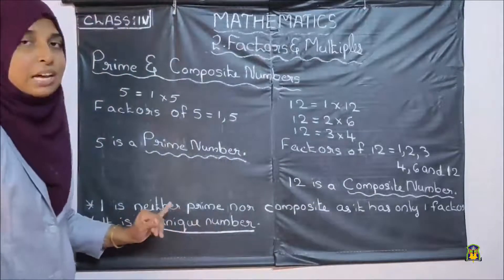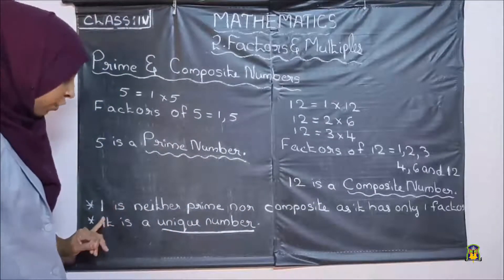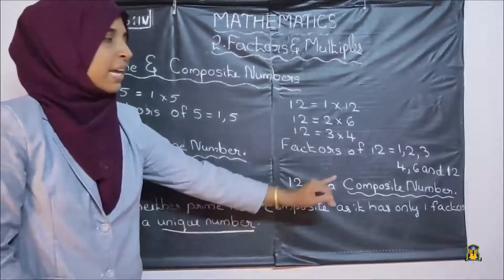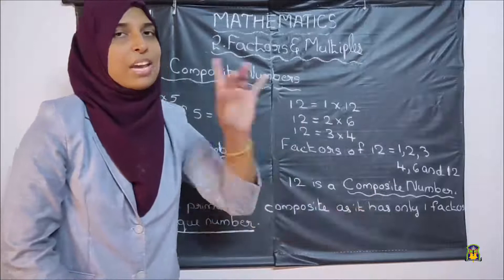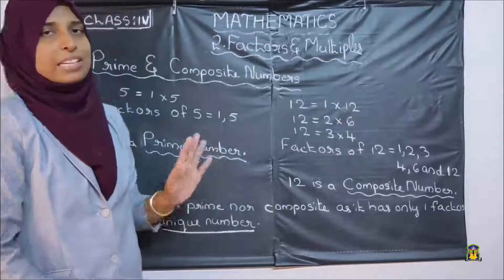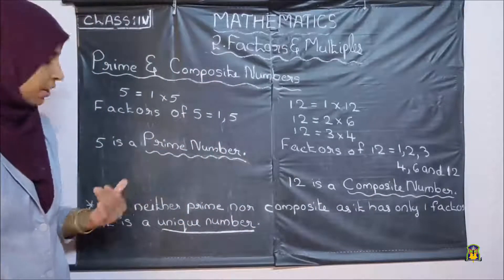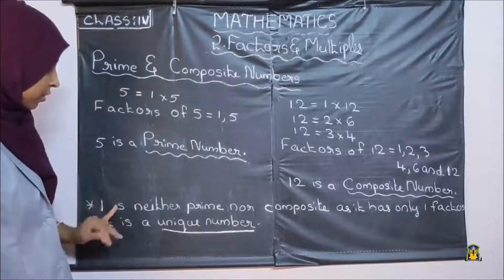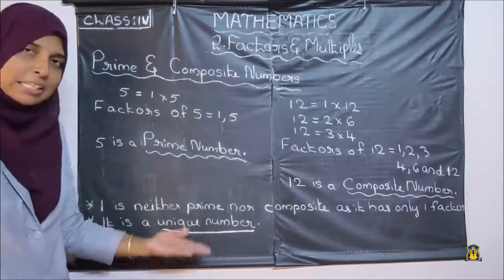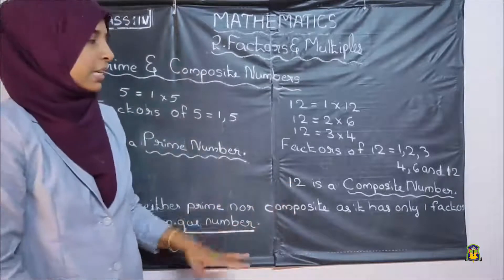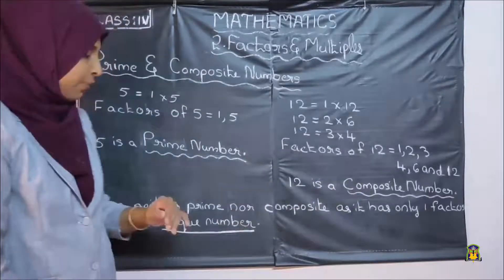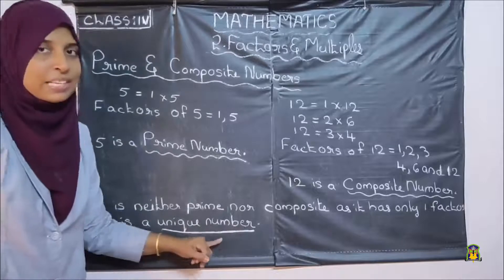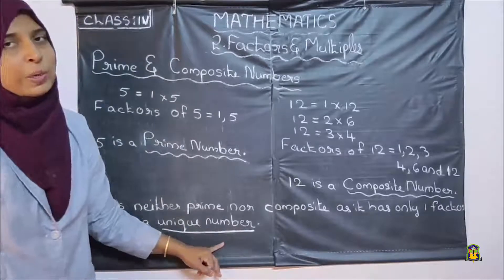What about the number 1? Now, 1 is neither prime nor composite as it has only 1 factor. 1 has only 1 factor, which is 1 itself. So 1 is neither prime nor composite — it is a unique number.